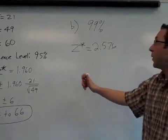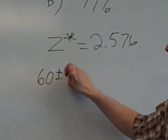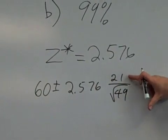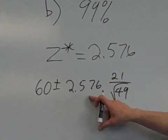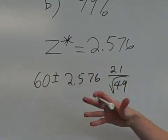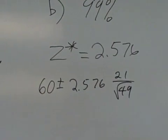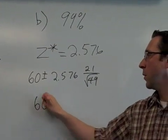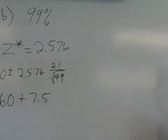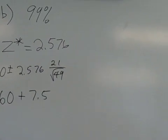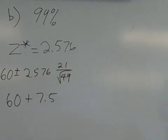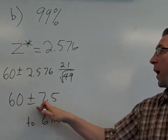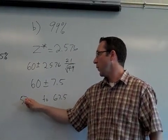So all the rest is still remaining the same. You get 60 plus or minus 2.576 times 21 over the square root of 49. So you get 21 over 7, which is 3. 3 times 2.5. 2 times 2.5 is 5, and then 3 times 2.5 would be about 7.5. So it's around 7.5, not exactly, but good enough for us for our first day. So the confidence interval will be the highest at 67.5, and the lowest would be 60 minus 7.5, which brings us to 52.5.